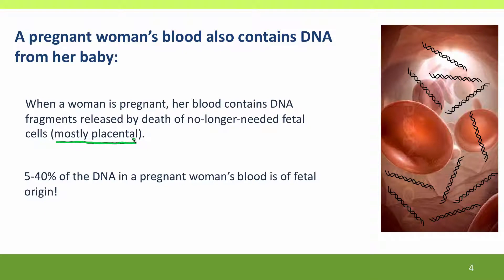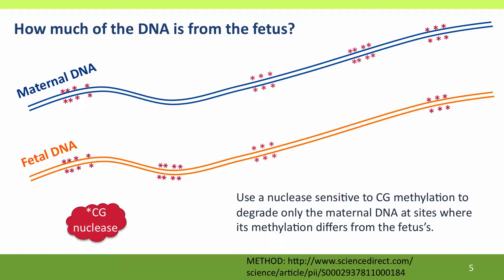A substantial fraction of the DNA in a pregnant woman's blood is of fetal origin. It's relatively small amounts early in the pregnancy and gets larger as the fetus gets larger. It's also larger in problem pregnancies than in healthy pregnancies. It's possible to determine how much of the DNA comes from the fetus using a particular nuclease that's sensitive to the methylation pattern of the DNA.